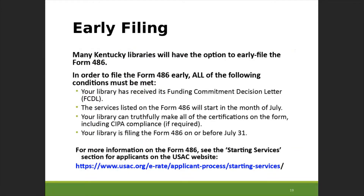Most Kentucky public libraries will have the option to early file the form 486, which means filing by July 31st. To do so, you must have received your funding commitment, the services must be starting in July, you must be able to truthfully make all certifications including CIPA compliance, and you must file on or before July 31st. If you don't early file, that's okay — it would just delay the start of e-rate invoicing. You just need to make sure you get it filed by the deadline.